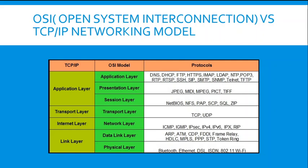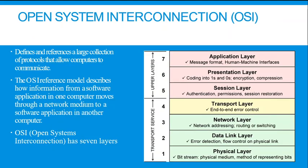In the physical layer we have Bluetooth, Internet, DSL, ISDN, 802.11, and Wi-Fi. The OSI Open System Interconnection defines a large collection of protocols that allow computers to communicate with each other. The OSI reference model describes how information from a software application in one computer moves through a network medium to a software application on another computer. OSI has seven layers: Application, Presentation, Session, Transport, Network, Data Link, and Physical.